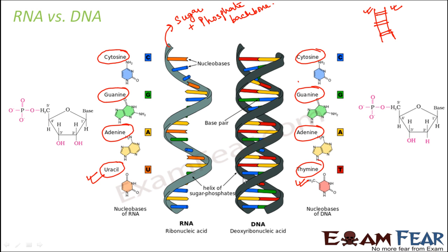Another important aspect is how nitrogenous bases are arranged. In DNA, the bases exist in pairs across the two strands. In RNA, being a single strand, you just have nitrogenous bases one after another, denoted by single letters C, G, A, and U. In DNA, one strand might have a sequence like A-G-T-C-A, and the other strand will also have a corresponding sequence.